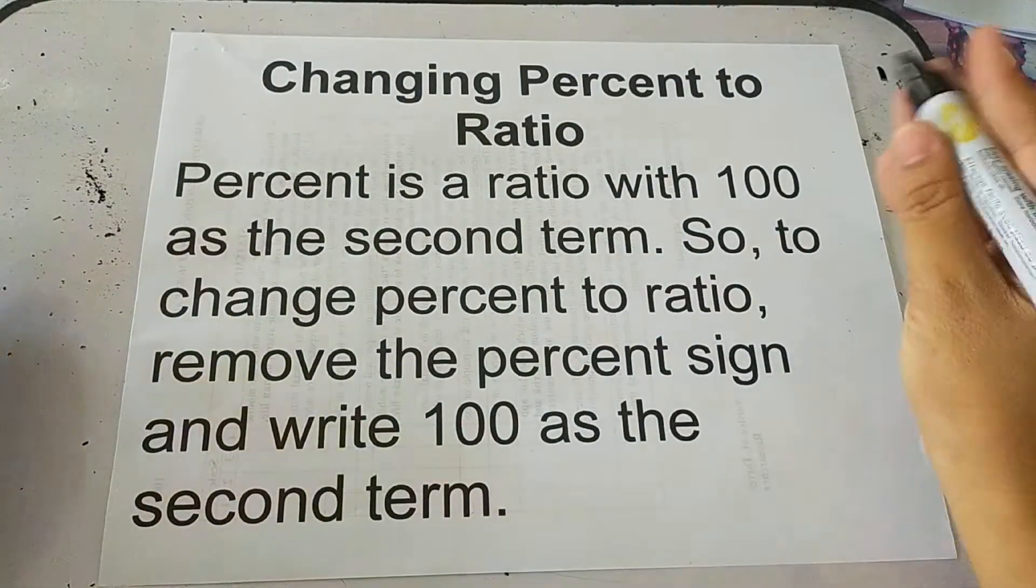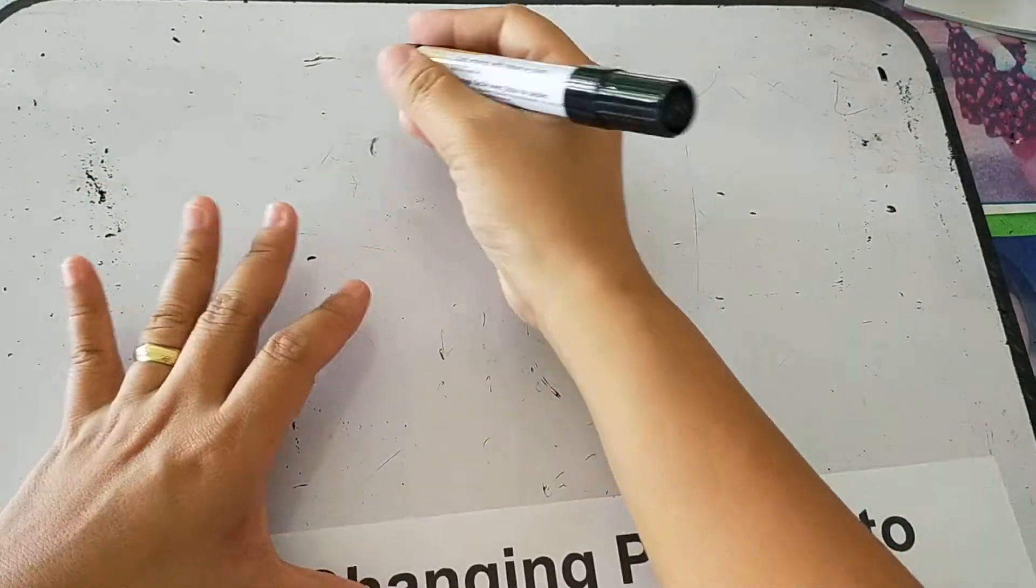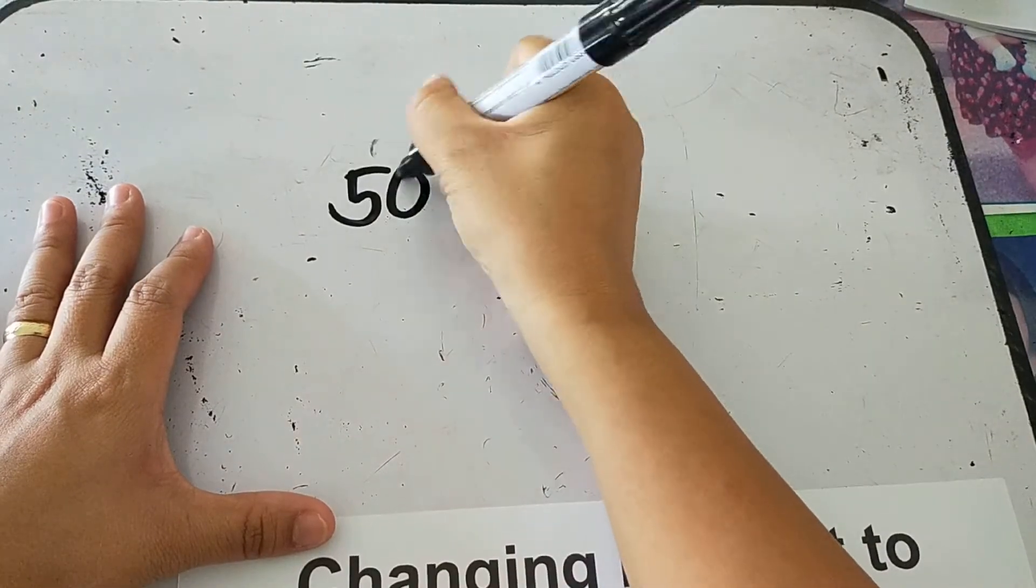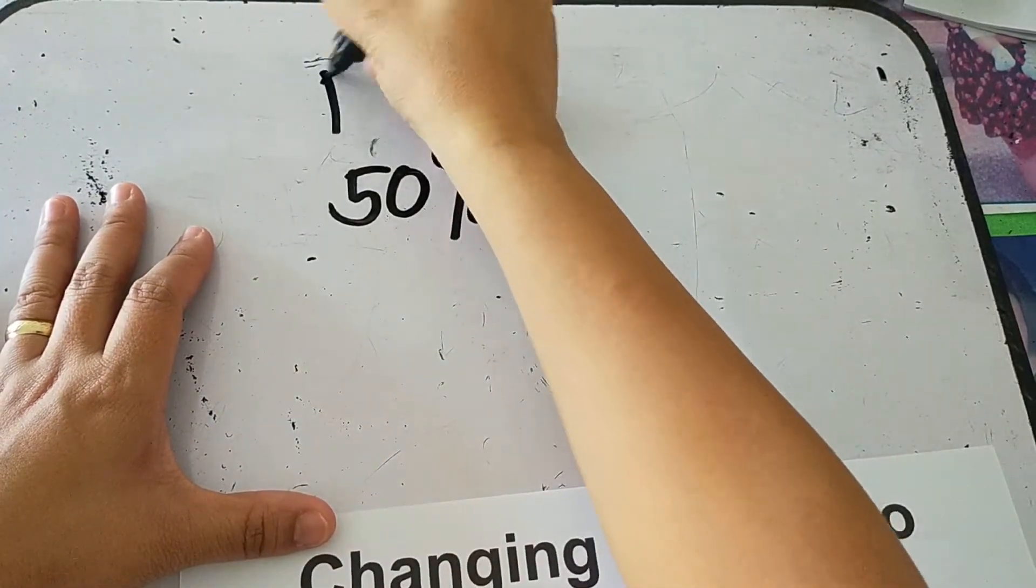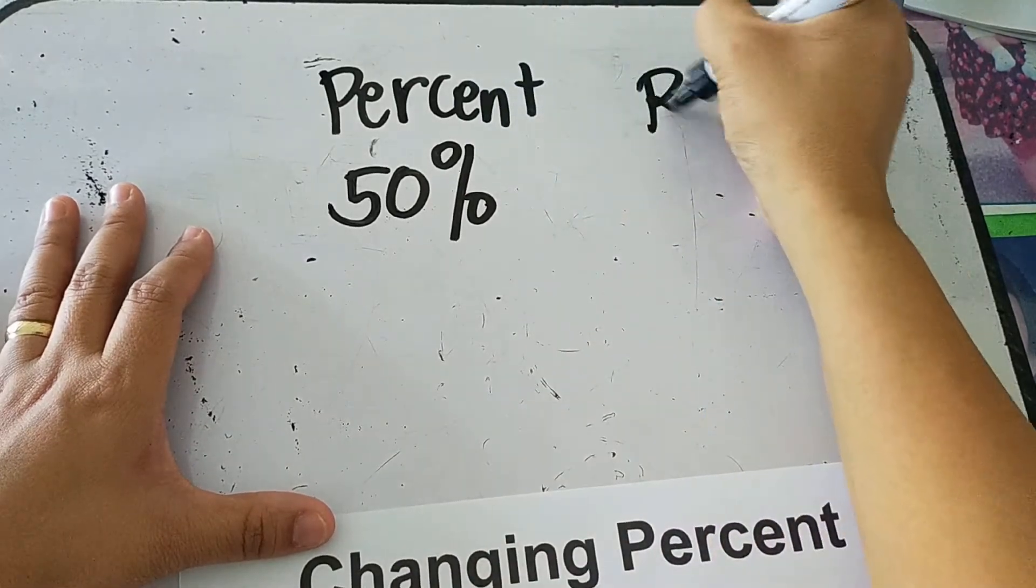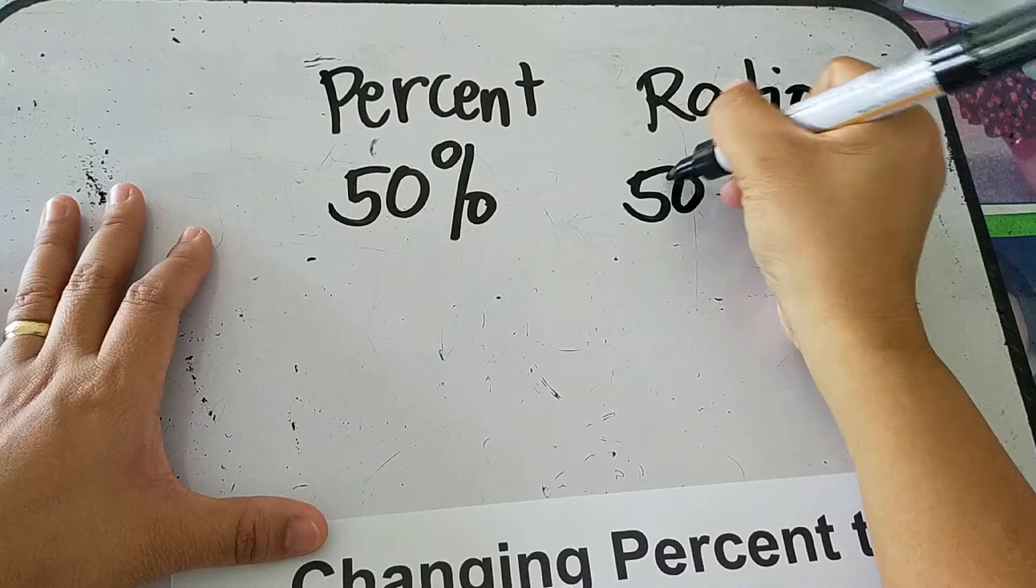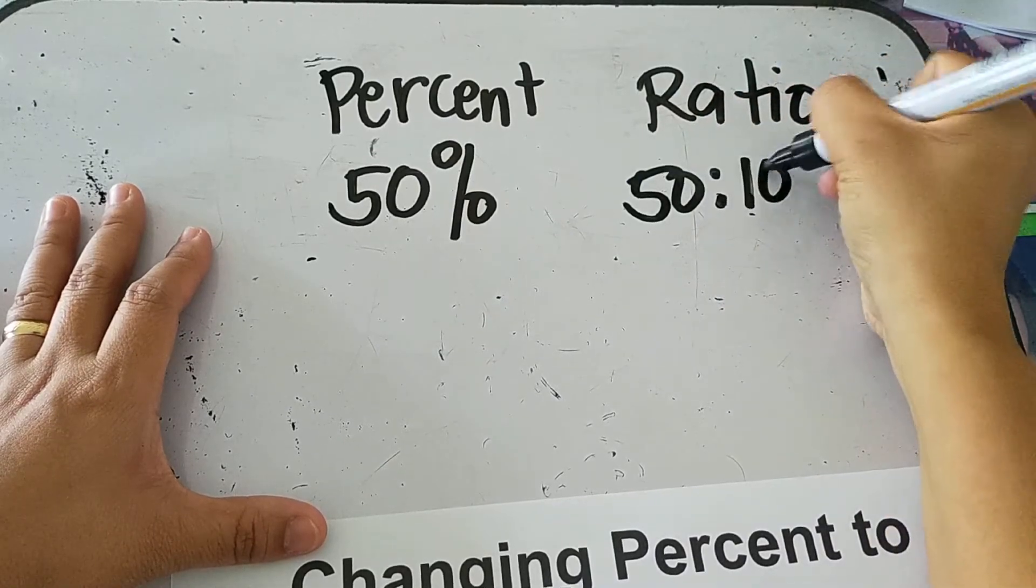But as we said, we need to reduce it to lowest term. So let's say 50 percent. So this is percent form. How about in ratio?